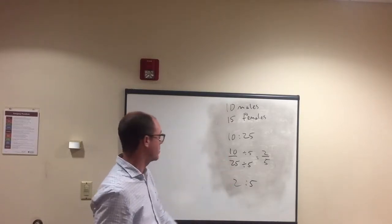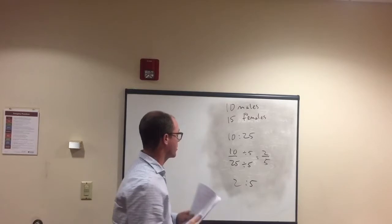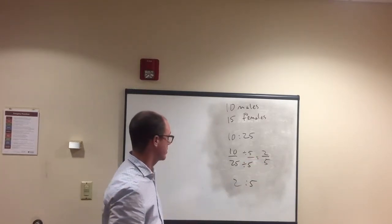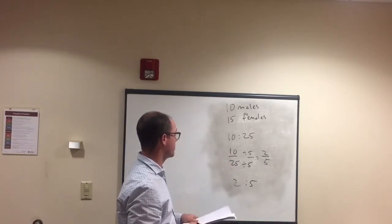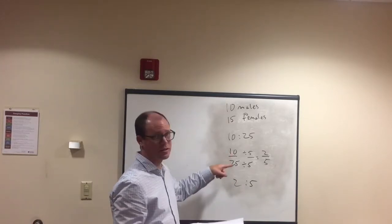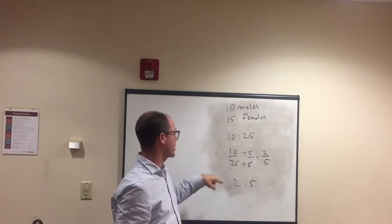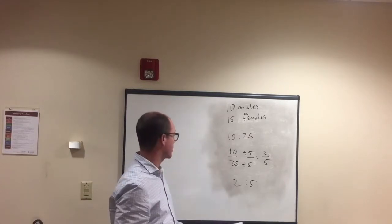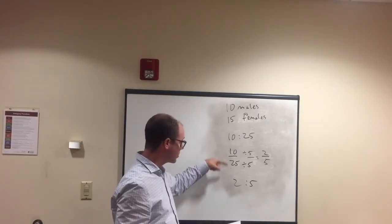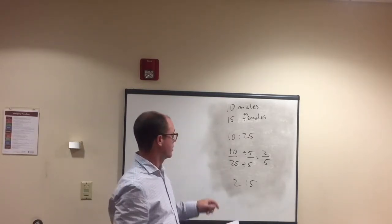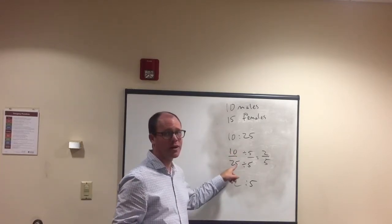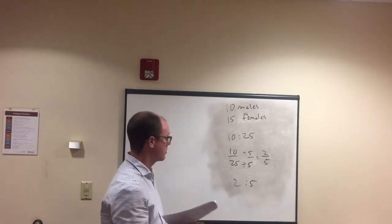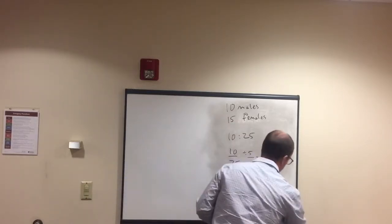When reducing these ratios, if it's not obvious what to divide by, start with two and work your way up. For 10 over 25: two doesn't work for 25, three doesn't work for either, four doesn't work, but five works for both — 10 divided by five is two, 25 divided by five is five. That's how you find the right number.